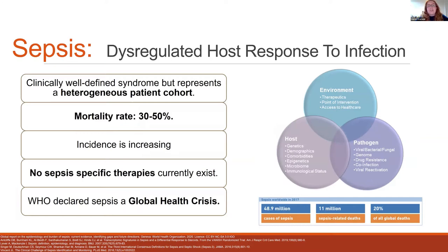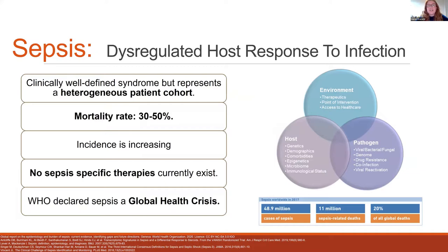Sepsis is the dysregulated host immune response to infection, and despite being clinically well defined, it represents a remarkably heterogeneous patient cohort. This is because of the interaction of many factors: host genetics, microbiome, environment, timing of identification, and therapeutics applied. There's additional heterogeneity introduced by the pathogen — viral, bacterial, fungal — and whether the pathogen has drug resistances.